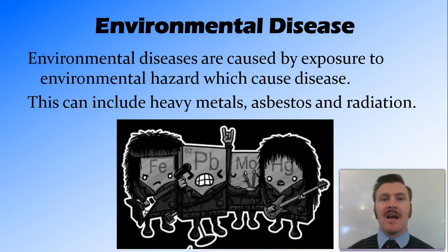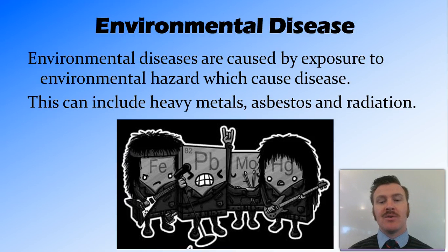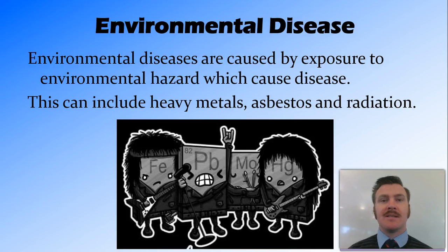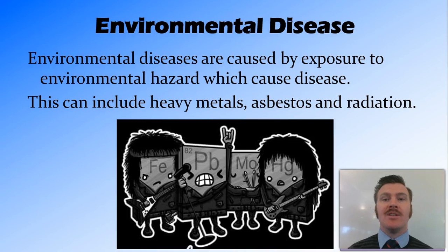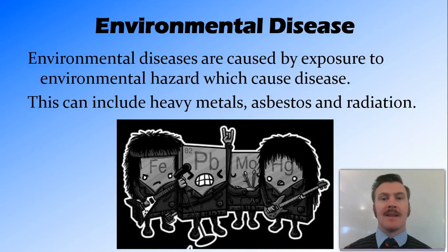Environmental diseases are diseases caused by exposure to the environment around you. Some of the big ones are exposure to heavy metals — for example, lead poisoning and mercury poisoning — as well as exposure to asbestos which can cause asbestosis, and exposure to radiation. Generally with radiation exposure we're talking about nuclear accidents that poison the ground, such as Chernobyl and Fukushima.